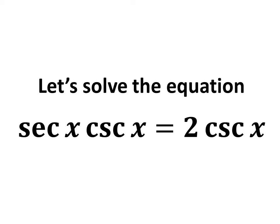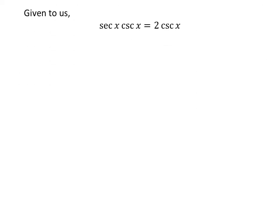In this video, we will learn to solve the equation secant of x times cosecant of x is equal to 2 times cosecant of x. Taking 2 times cosecant of x from the right hand side of the equation to the left hand side gives us secant of x times cosecant of x minus 2 times cosecant of x is equal to 0.